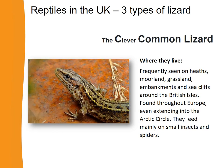And now the common lizard — where do they live? Common lizards are frequently seen on heaths, moorland, grassland and sea cliffs all around the UK, and they're sometimes found elsewhere as well — even into Europe and the Arctic Circle. What do their habitats give them? In terms of food, they mainly feed on small insects and spiders.